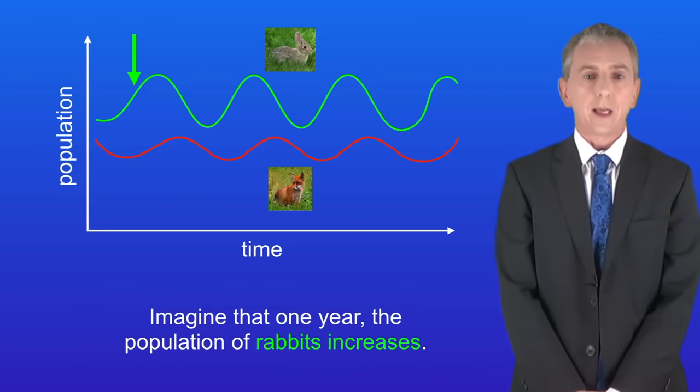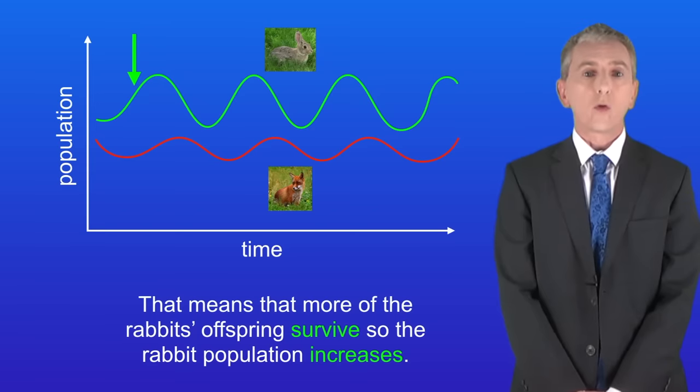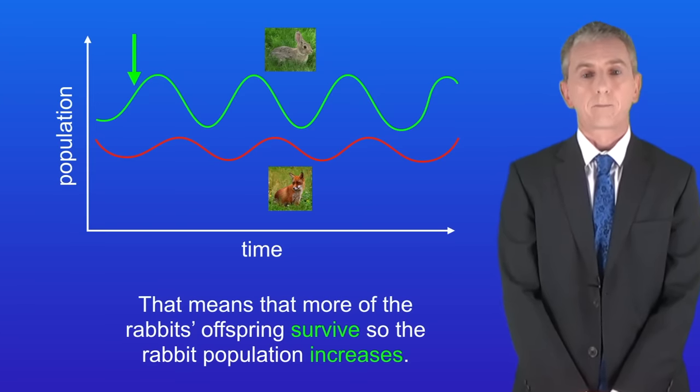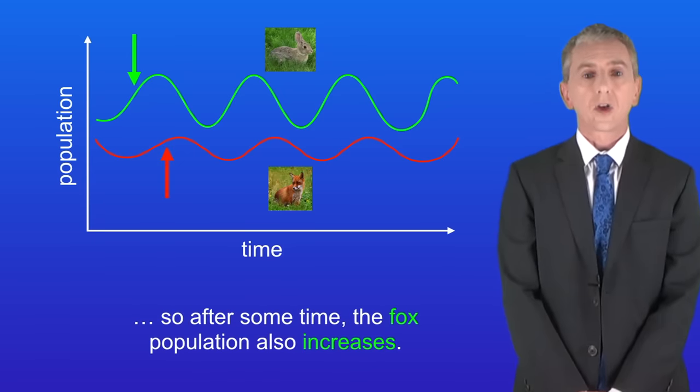Imagine that one year the population of rabbits increases. For example it could be a warm summer so there's plenty of grass for the rabbits to eat. That means that more of the rabbits offspring survive so the rabbit population increases. Now the foxes have more rabbits to kill and eat so after some time the fox population also increases.